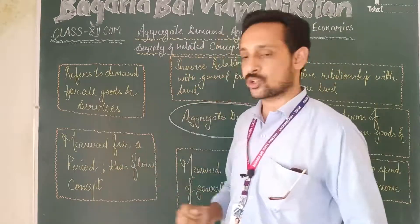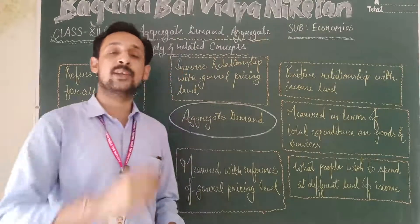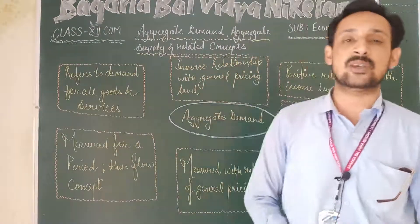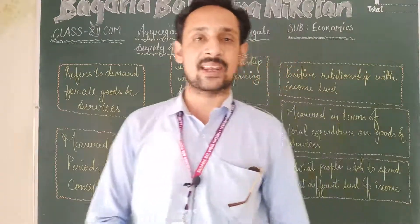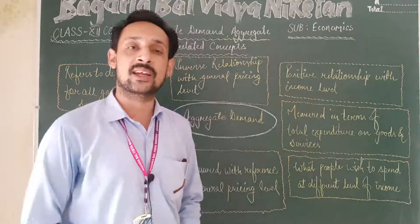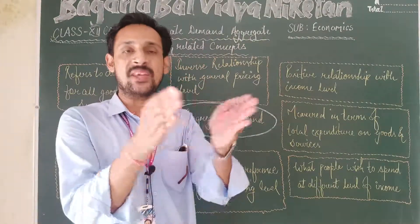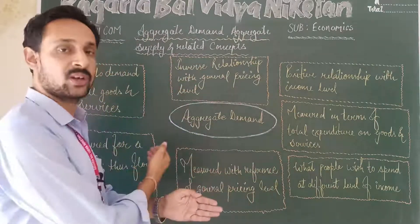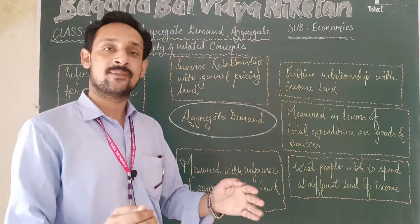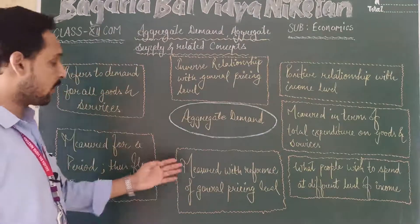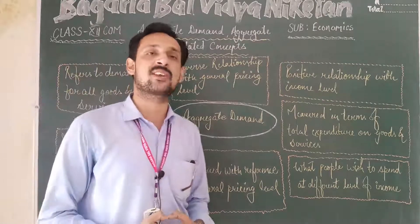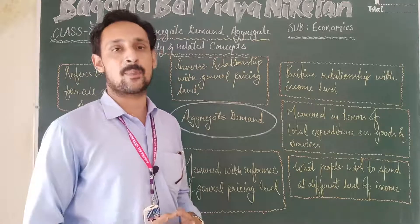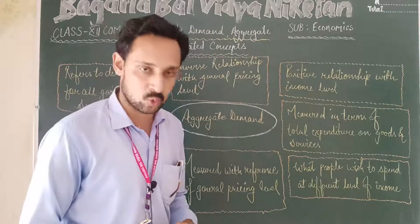Aggregate demand is a flow concept. We discussed stock and flow concepts in our first unit: stock concepts are measured at a particular point in time, while flow concepts are measured for a period of time. Since aggregate demand is measured over an accounting period, it is a flow concept. It is also measured with reference to the general pricing level.